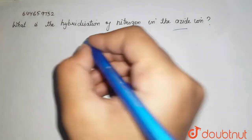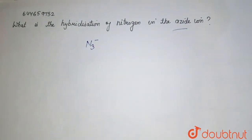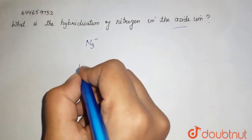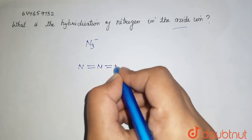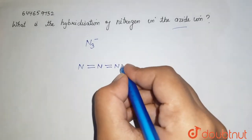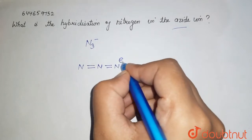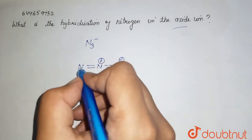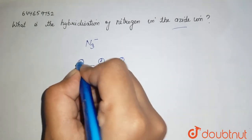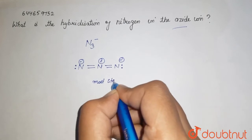The hybridization of nitrogen in the azide ion. This azide ion is N₃⁻, meaning there are three nitrogens and it contains a negative charge. To draw its structure: nitrogen forms a double bond here and a double bond here. Nitrogen contains five valence electrons because it belongs to group 15. This end has a negative charge, this one has a positive charge, and this end has one lone pair with a negative charge.